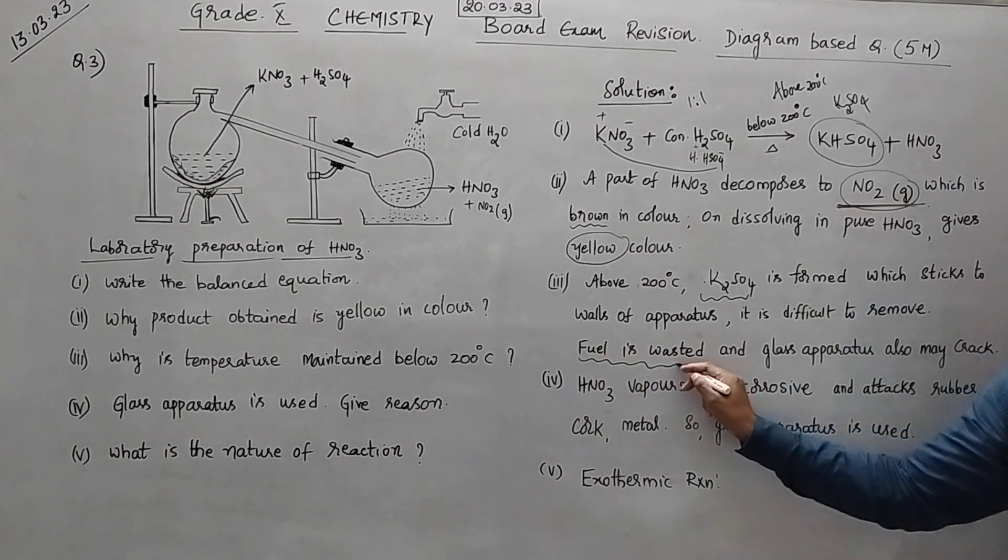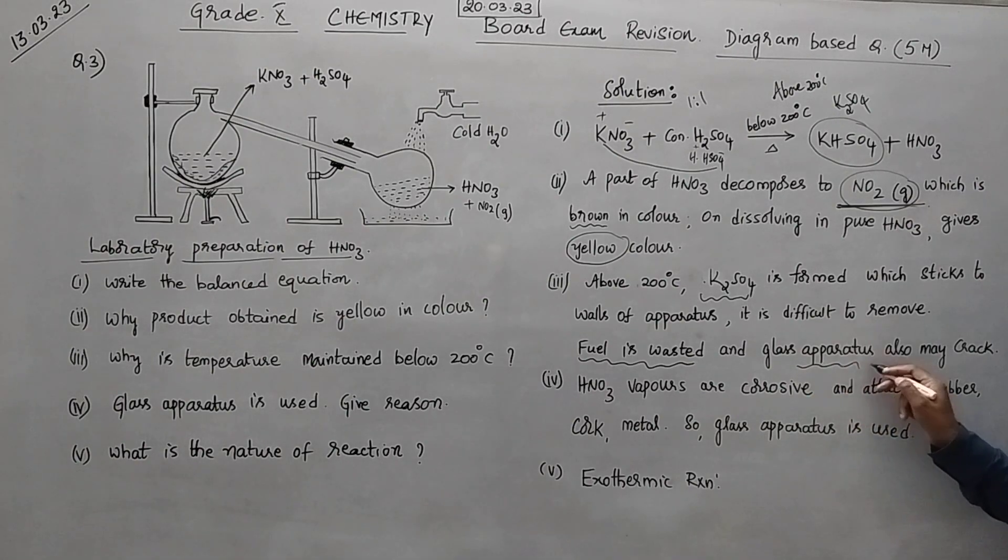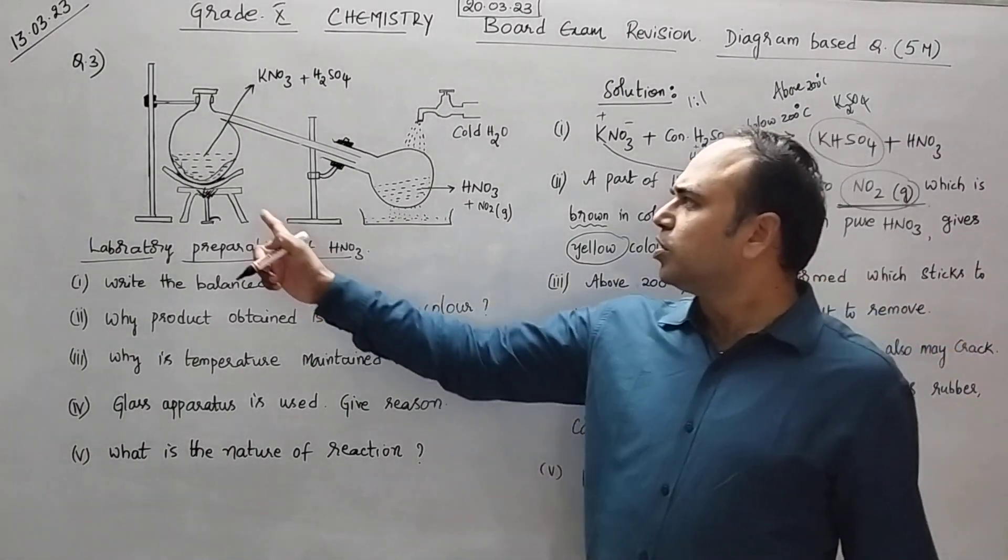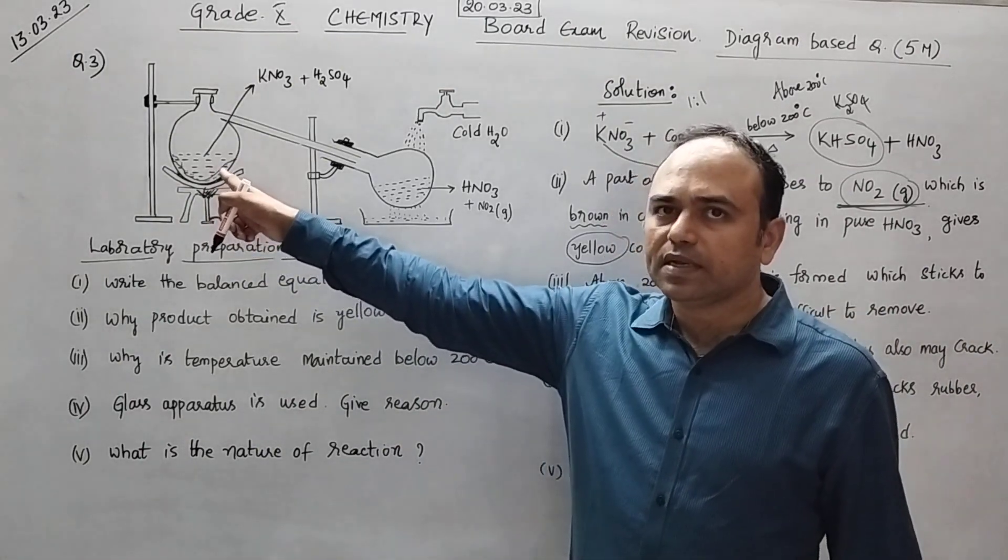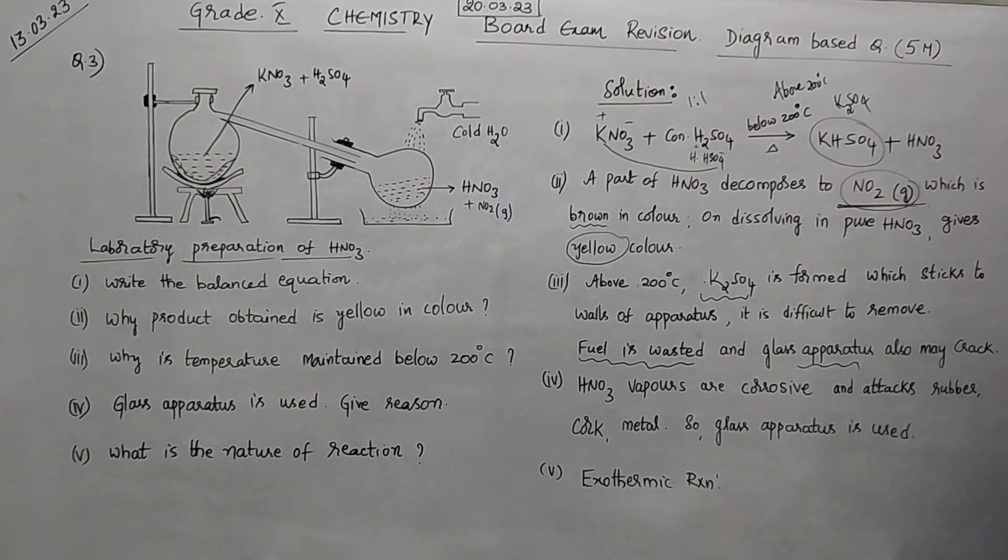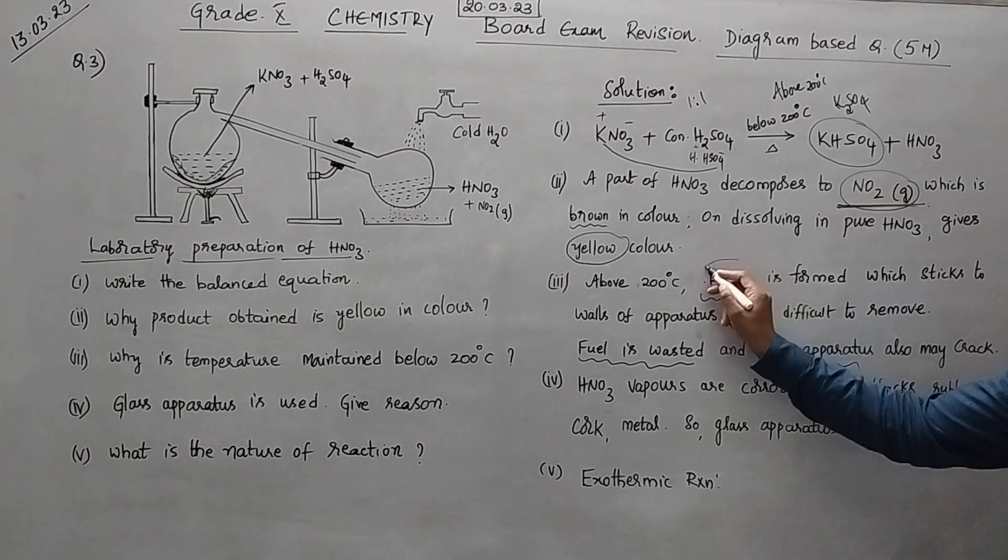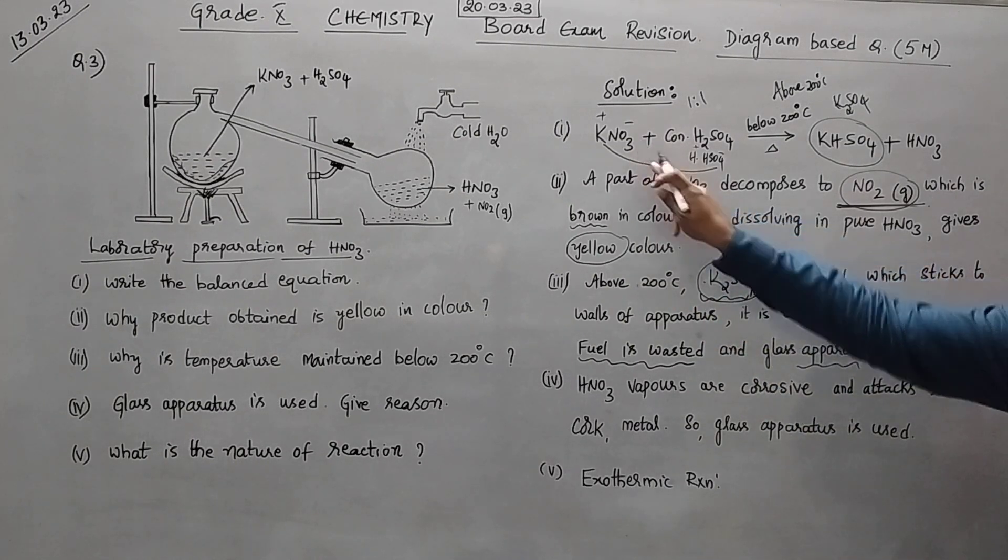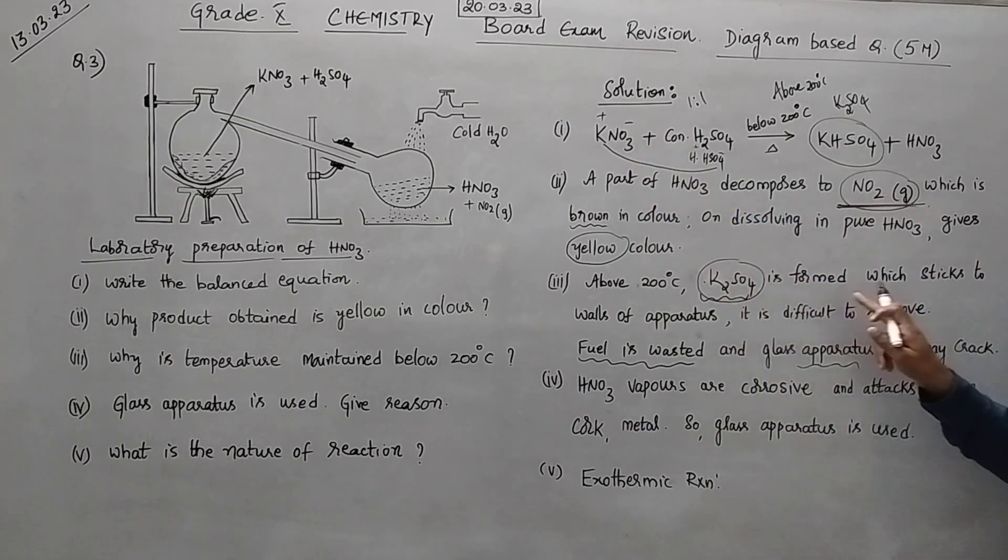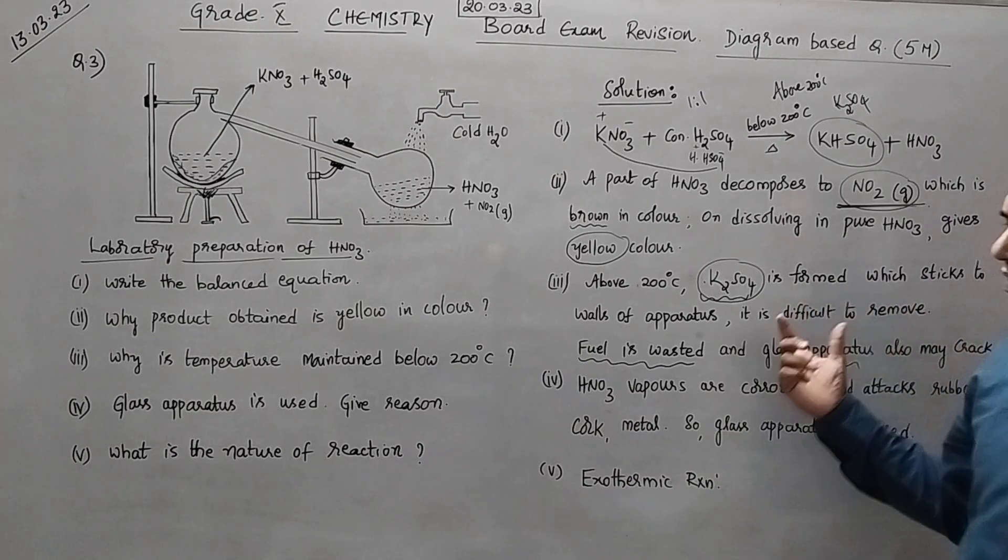Secondly, more fuel is wasted. And also the glass apparatus may crack. So that means that is a disadvantage. So always the heating should be less than 200 degrees Celsius. Important keyword. Above 100 what is happening? If you use KNO3 you will get K2SO4 which is a sticky mass.